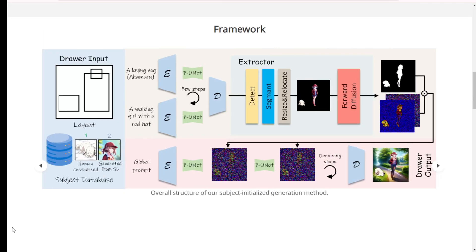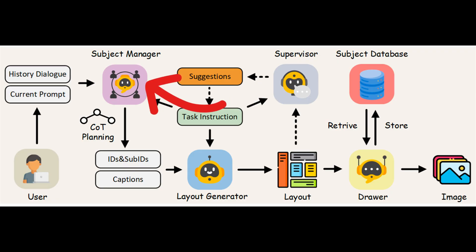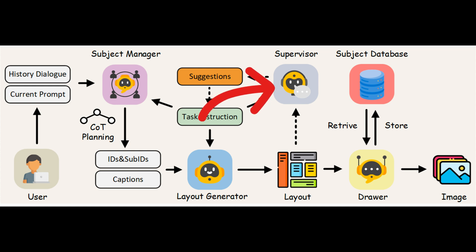This model employs a unique multi-agent framework to manage the intricacies of interactive image generation. Let's break down the key components. First, the Subject Manager: this agent interprets user dialogues, understanding and managing the context of each subject, ensuring that the model keeps track of all the elements you're interacting with. Second, the Layout Generator: it creates fine-grain bounding boxes to control where each subject is placed within the image, which helps in maintaining spatial consistency. Third, the Supervisor: this agent provides suggestions for refining the layout, making sure that all elements are correctly positioned before the final image is generated.